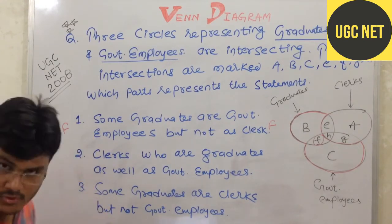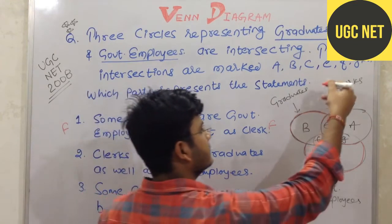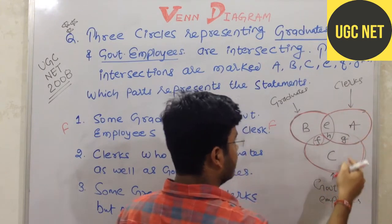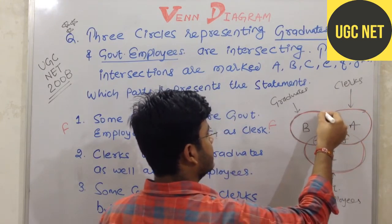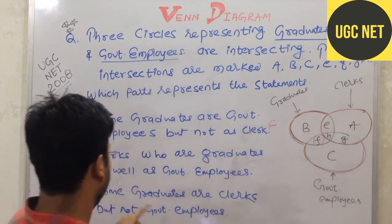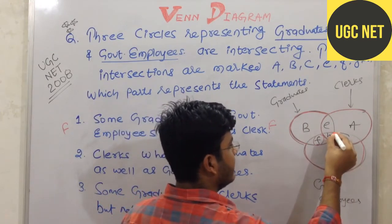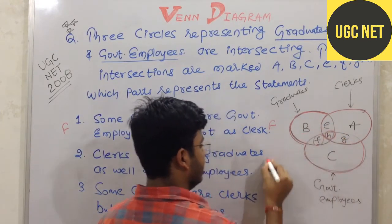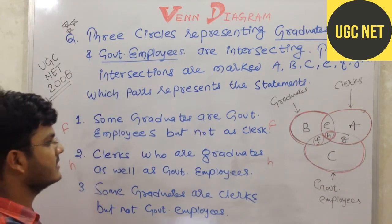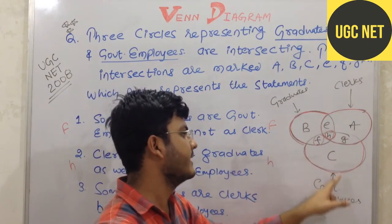Now question number 2 says: clerks who are graduates as well as government employees — meaning all three categories together. All three are definitely denoted by the middle region, which is H. So H is the correct answer for question number 2, because it represents the intersection of graduates, clerks, and government employees.